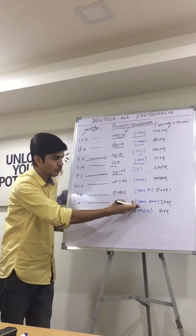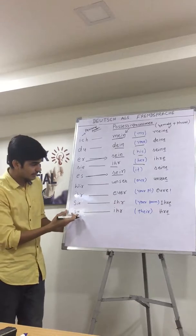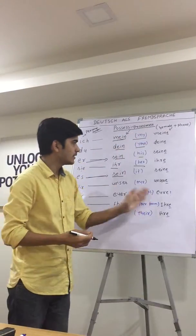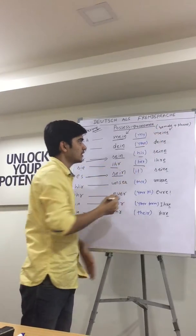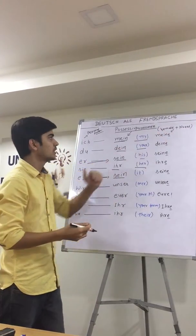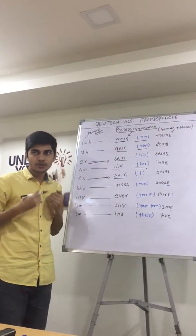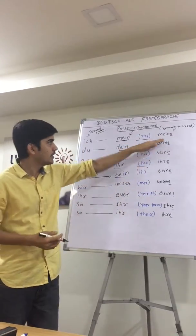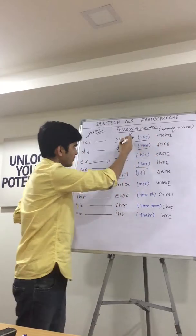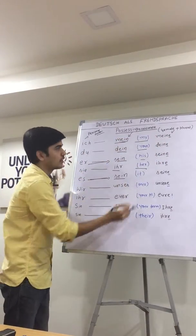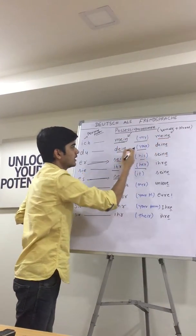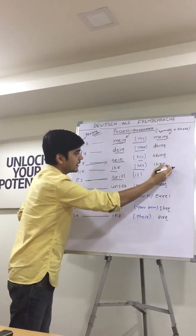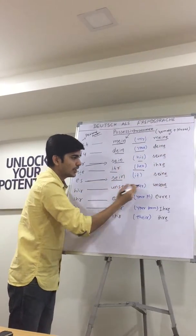See here — in the case where we are using the feminine or plural sense, if we are showing possession relating to a female or in a plural sense, then we use an extra '-e' added to the possessive pronoun. For example: 'mein' becomes 'meine', 'dein' becomes 'deine', 'sein' becomes 'seine', 'ihr' becomes 'ihre', 'unser' becomes 'unsere'.